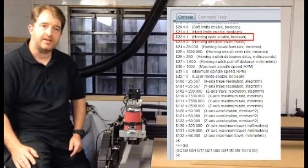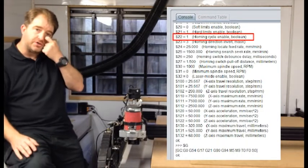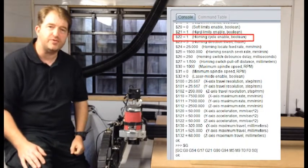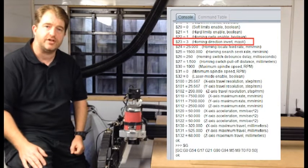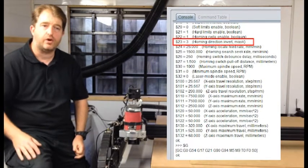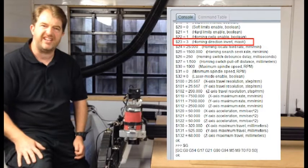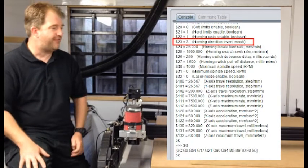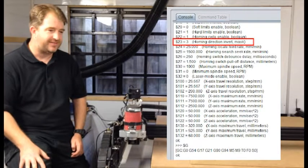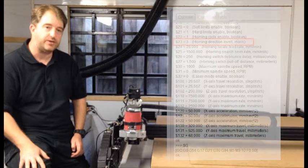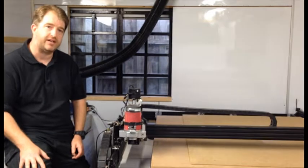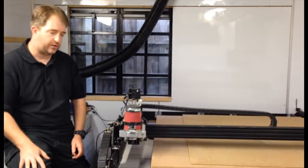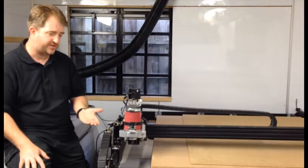And then the other important and sometimes confusing setting is $23, the homing direction invert mask. That uses a binary code to work out how you want this thing to home.